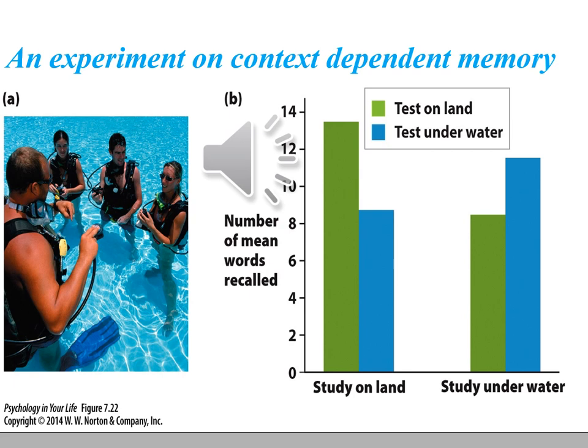In a context-dependent memory experiment, some participants memorized words while scuba diving; others memorized words on the beach. Later, subjects tested where they had originally learned the words recalled more of them. Subjects who learned words underwater recalled more while underwater; those who learned on the beach recalled more on the beach — a simple, elegant experiment showing context-dependent memory.